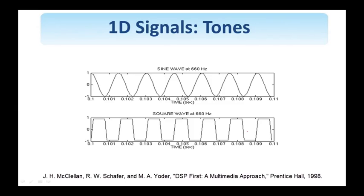Tones are examples of one-dimensional signals. On top you see a sine wave that has only one frequency present at 660 Hz — that's why it's called a pure tone. At the bottom you see a square wave, which also has the fundamental frequency at 660 Hz. However, it has additional frequencies — the so-called harmonics. The bottom square wave is richer in the sense of having additional frequencies compared to the pure tone sinusoid.